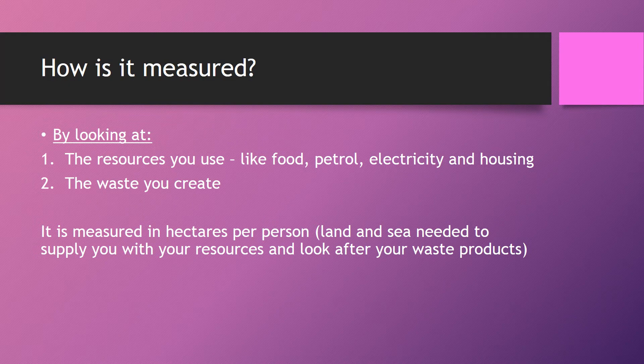So how do we measure this ecological footprint? They look at all the resources you use — things like food, petrol, electricity, gas, housing, any materials — and also the waste that you create. From that, a figure is generated measured in hectares per person, indicating how much land and sea would be needed per person per year to provide all resources and manage all waste.